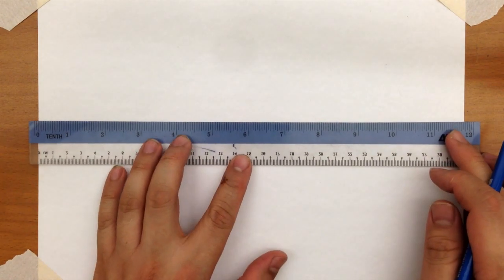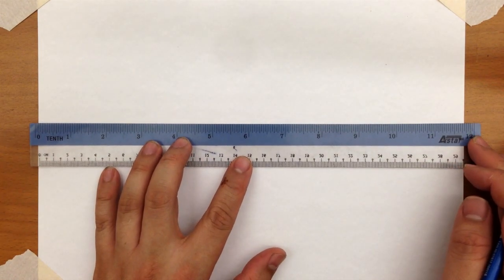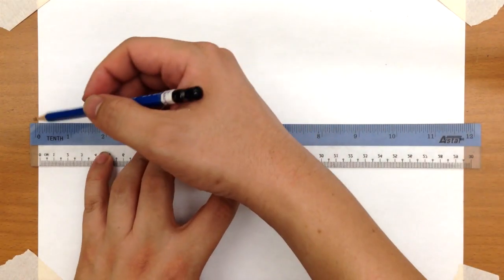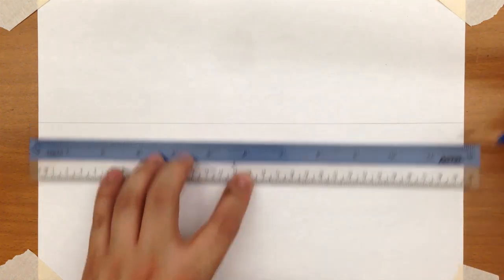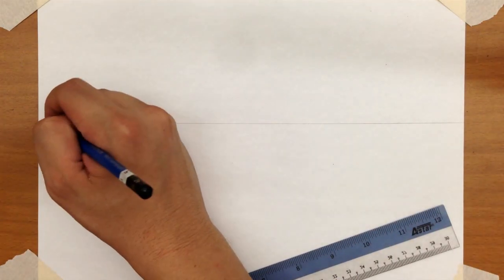For the purpose of this assignment, we're going to put the eye level right at the middle point. So take your ruler, draw a line at the center. This is the eye level, EL.